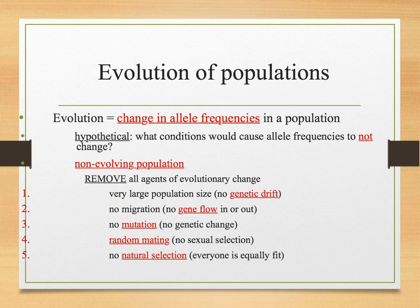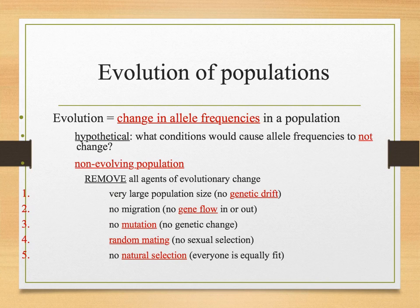It's not like if I spend a lot of time in the bathtub I'm going to evolve and have gills. It's not going to happen with one person. It happens in a population over time — it's a change in the frequency of alleles. We see this with humans: the amount of people who have wisdom teeth is decreasing, meaning the alleles for wisdom teeth are decreasing over time. We are evolving.